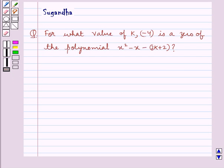Hello and welcome to the session. In this session we discuss the following question: For what value of k is -4 a zero of the polynomial x² - x - (2k + 2)?